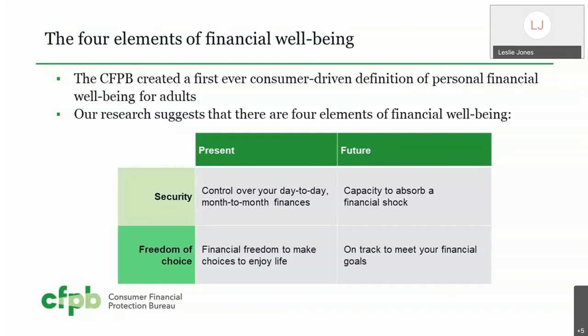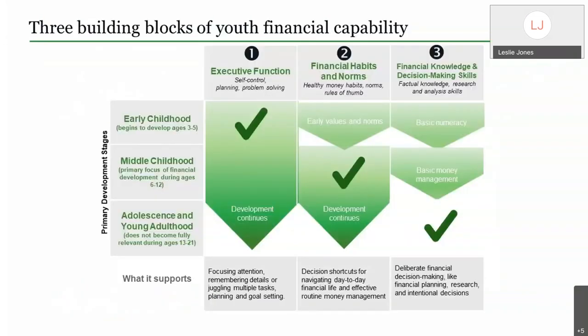I'm going to switch off of adult financial well-being because you're here to learn more about youth financial capability. After the Bureau defined adult financial well-being, they logically asked: how do we get kids to be adults with adult financial well-being? They came up with three building blocks of youth financial capability: executive function, financial habits and norms, and financial knowledge and decision-making skills. These are grouped into three developmental stages — early childhood, middle childhood, and adolescence and young adulthood.